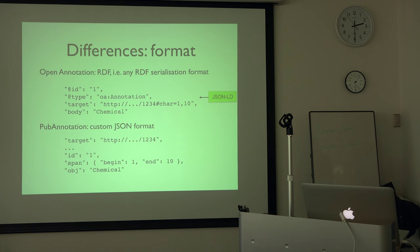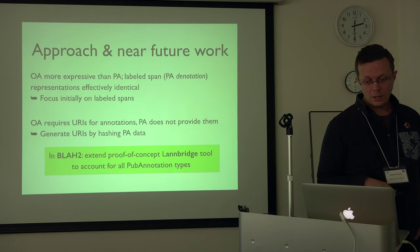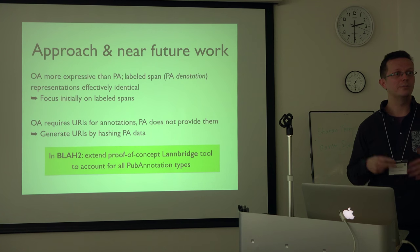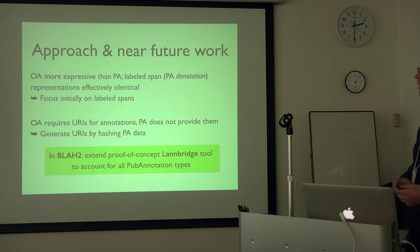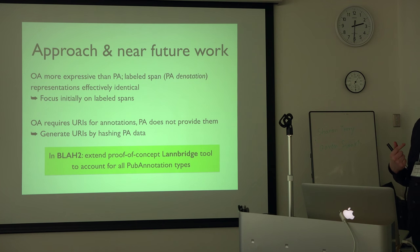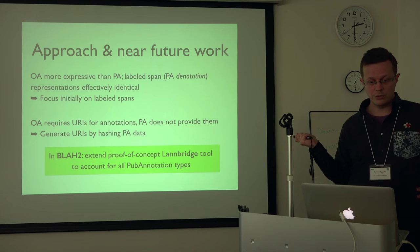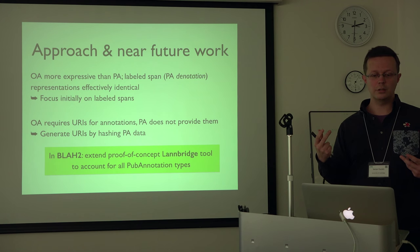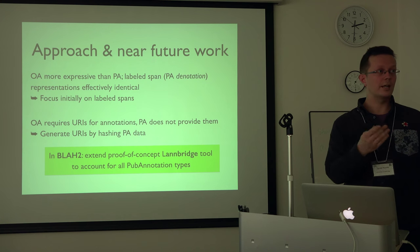As you can see, for some cases these two things look really, really similar. Regarding the current status of the implementation: the open annotation format is more expressive, but coincides almost completely on the representation of what is basically a labeled span — a span of text with a label. A very limited but very useful category of annotation. The LangBridge tool currently just implements this translation for labeled spans. Also, open annotation requires annotations to have URIs, but these don't fall out of pub annotation, so I'm grabbing the associated unique identifying data from the pub annotation structure and hashing that to generate URIs.